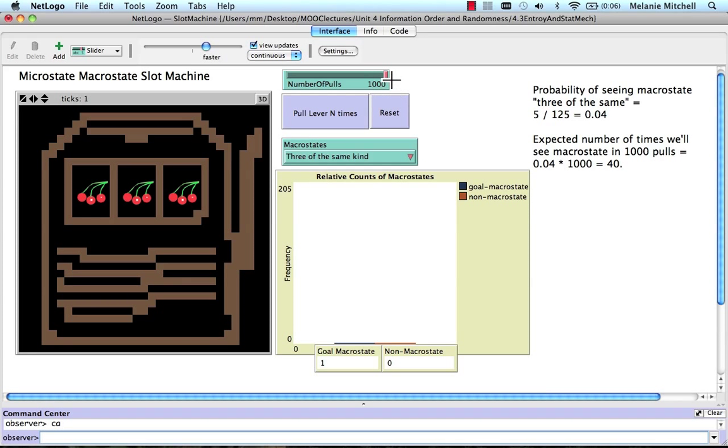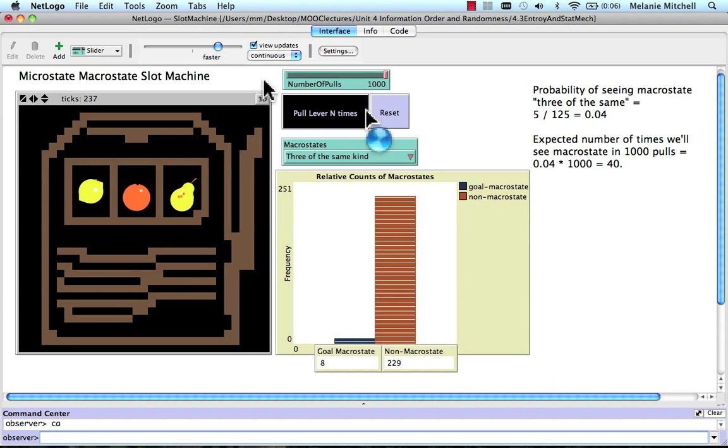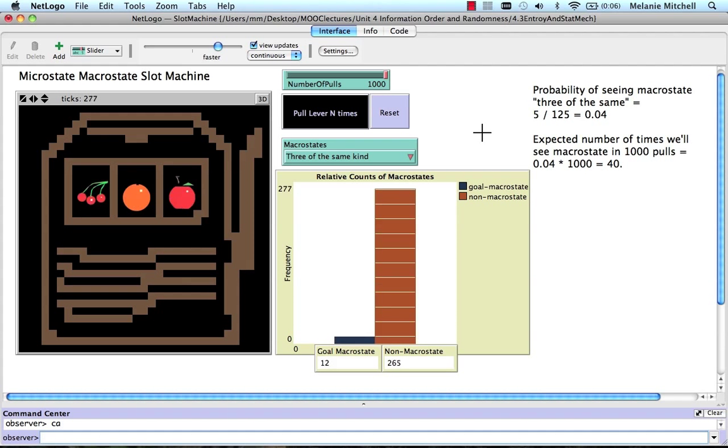Of course, there's some randomness here. So I'm going to reset and pull the lever 1,000 times. And we can speed it up a little bit, perhaps. And we're seeing it slows down a little bit when it gets a jackpot.